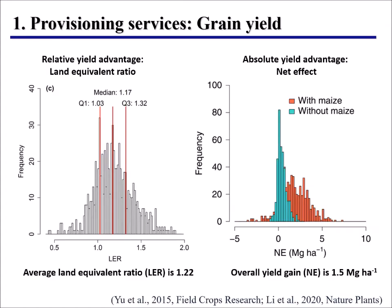We start with provisioning services — specifically, grain yield. Can intercropping increase grain yield? Here we show two meta-analysis studies to answer this question. On the left, we use a metric called the land equivalent ratio (LER). LER is defined as how much land is needed to produce the same yield in sole crops as intercrops per unit area. If LER is larger than one, that means intercropping has higher land use efficiency — in other words, a higher relative yield advantage. Based on these results, the LER is 1.22, so intercropping has a clear yield advantage.